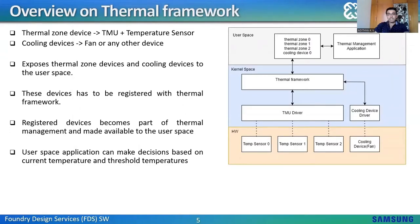Let's look at the Linux thermal framework. Any TMU or temperature sensor is called a thermal zone device, and any device related to cooling such as a fan is called a cooling device. The Linux thermal framework exposes these cooling devices and thermal zone devices to user space. In order to expose them to user space, these devices must be registered with the thermal framework. Once registered, they become part of thermal management. A user space application can then take decisions based on the current temperature from these devices as well as based on threshold temperatures.